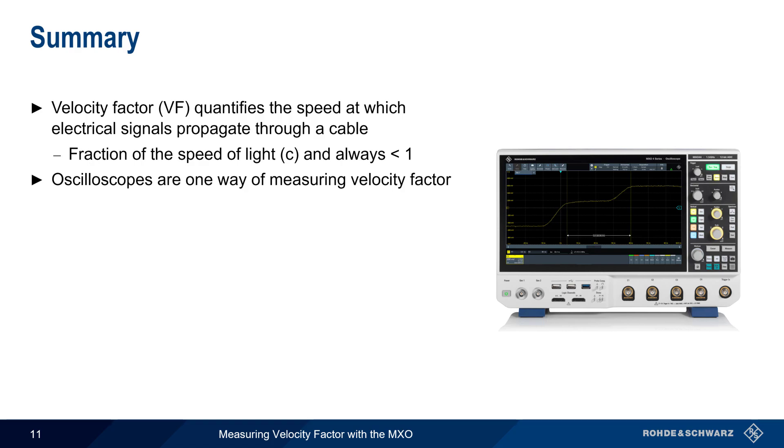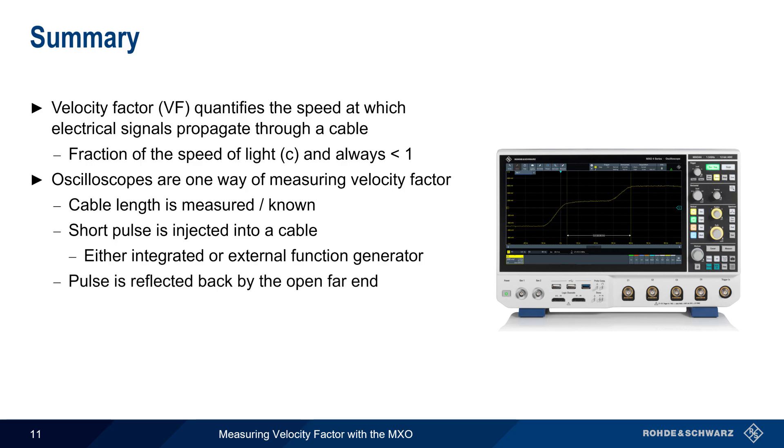The steps are as follows. First, the physical length of the cable must be known or measured. A short pulse with a fast rise time is then injected into the cable. This pulse can be created using the MXO's internal function generator, or by using an external generator. The end of the cable is left open so that this pulse is reflected back from the far end, and the round trip time between the transmitted and received pulse is measured by the MXO.